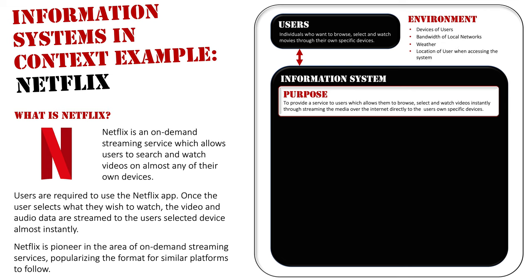Finally, the location of the user when accessing the system matters. If I'm at home using my own Wi-Fi, I can watch the Netflix app easily, but if I go on holiday down the coast into a more remote location, I might not be able to receive a signal as well. So these environmental factors will impact the system, and there are many more we could go into — but this is just an introduction.